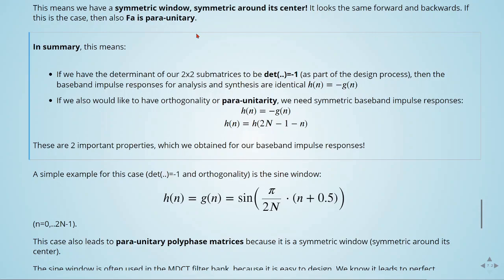If we also would like to have orthogonality or para-unitarity, we need symmetric baseband impulse response. And we have h is equal to minus g and h is equal to h of the 2 times capital N minus 1 minus n. These are two important properties which we obtain for our baseband impulse responses.